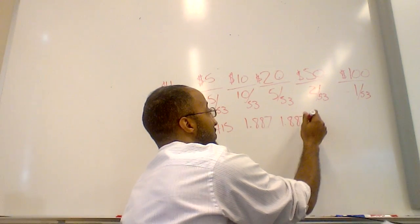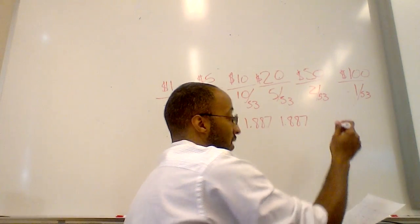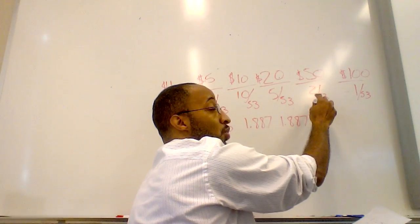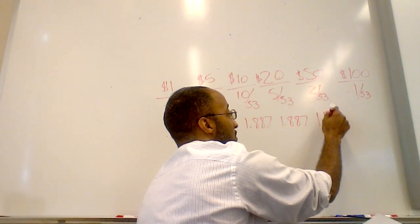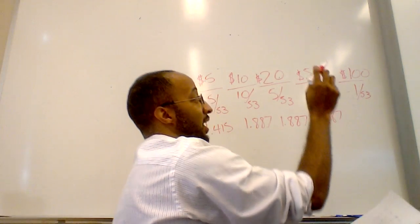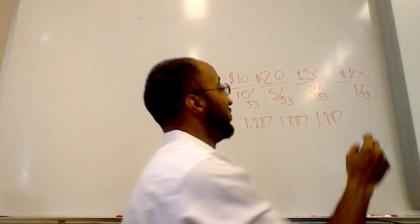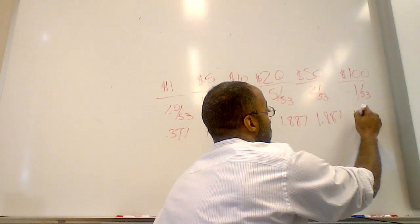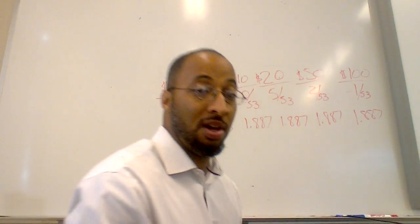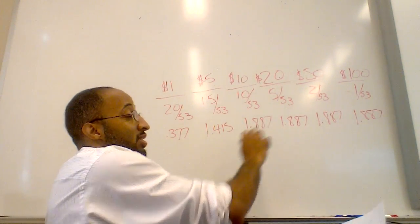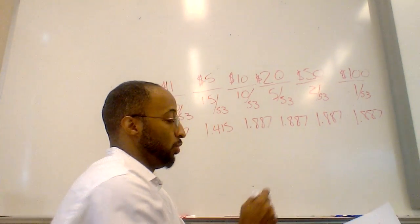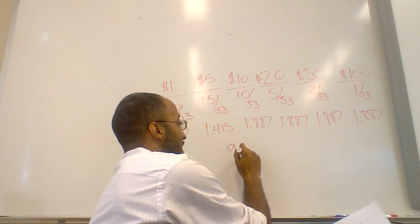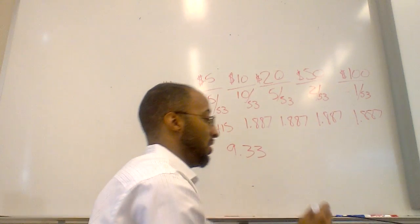Right here with 50 times 2 over 53, you get another $1.887. And 100 times 1 over 53 gives us $1.887. Now we add all these up to get our expected value, which would be $9.33. So if we charge $10, we're making a profit and we're doing pretty good.